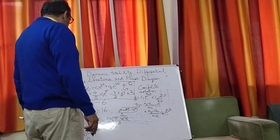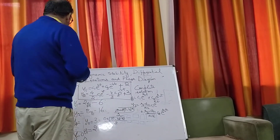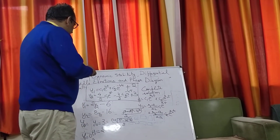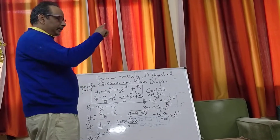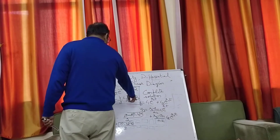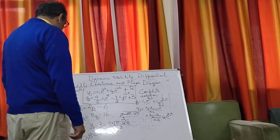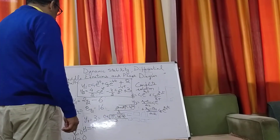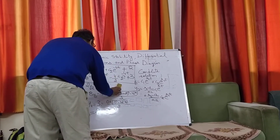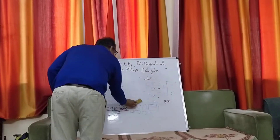Now I am going to draw the phase diagram to understand the dynamic stability, and to understand the saddle path, which is the unique path that will take you to the equilibrium solution. The equilibrium is at y1 equals 2 and y2 equals 3. We will see how you would get to the equilibrium.